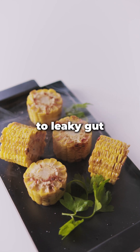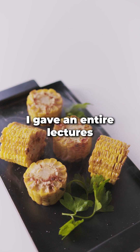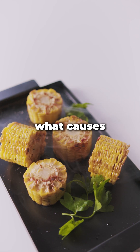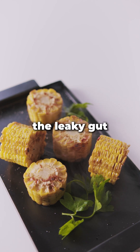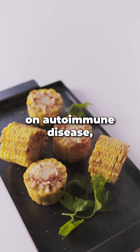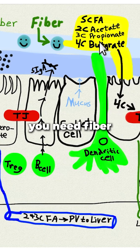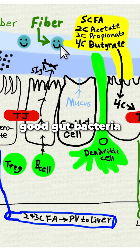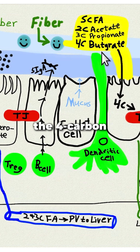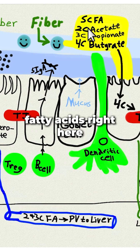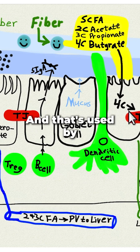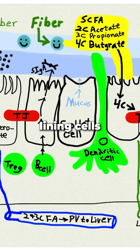The lack of dietary fiber leads to leaky gut. You need fiber so that the good gut bacteria can make butyrate, the four-carbon fatty acid. These are called short-chain fatty acids, and that's used by the enterocytes — the gut lining cells — to make tight junctions.